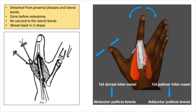A longitudinal incision is given on both sides of the long extensor tendons so that the intrinsic muscles are separated from the extensor expansion as well as from the periosteum of the proximal phalanx. Proximal dissection is also done from the metacarpal bone before the osteotomy, taking care to preserve the neurovascular bundles of these muscles. Once skeletal relocation is done, the first dorsal interosseus functions as the abductor pollicis brevis, the first palmar interosseus functions as the adductor pollicis, and the lateral expansions are re-sutured to the lateral bands in a U-shaped configuration as shown in the inset.